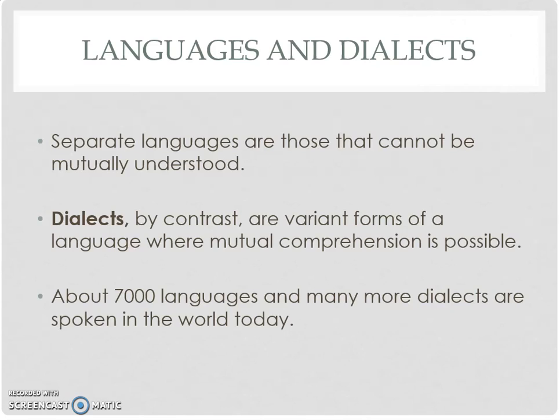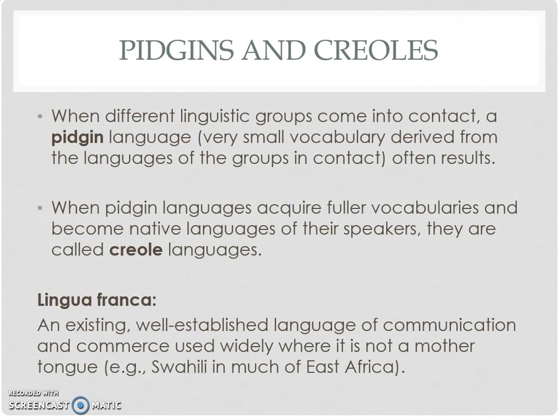About 7,000 languages and many more dialects exist. Pidgin language forms where different linguistic groups come into contact, with a very small vocabulary derived from those languages. Creole languages are native languages with their own speakers. Lingua franca is where a region or realm speaks several different languages but shares a common one.